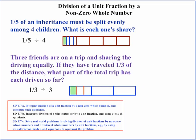Let's look at 7C with some real-life context. One scenario: we have an inheritance, and one-fifth of that inheritance is going to be split evenly among four children. What is each one's share? Our visual shows the whole inheritance split into five parts. Then that one-fifth is what we actually split into four parts. We have to consider that one small green part with respect to the whole inheritance. If we count all of these up and subdivide the rest, we end up with one piece out of 20.